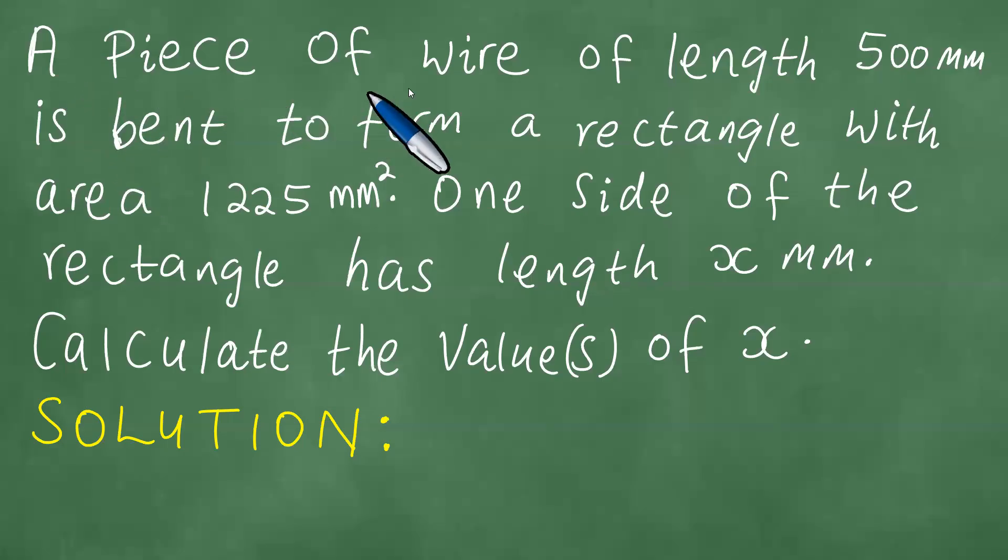A piece of wire of length 500 mm is bent to form a rectangle with area 1225 square millimeters. One side of the rectangle has length x mm.